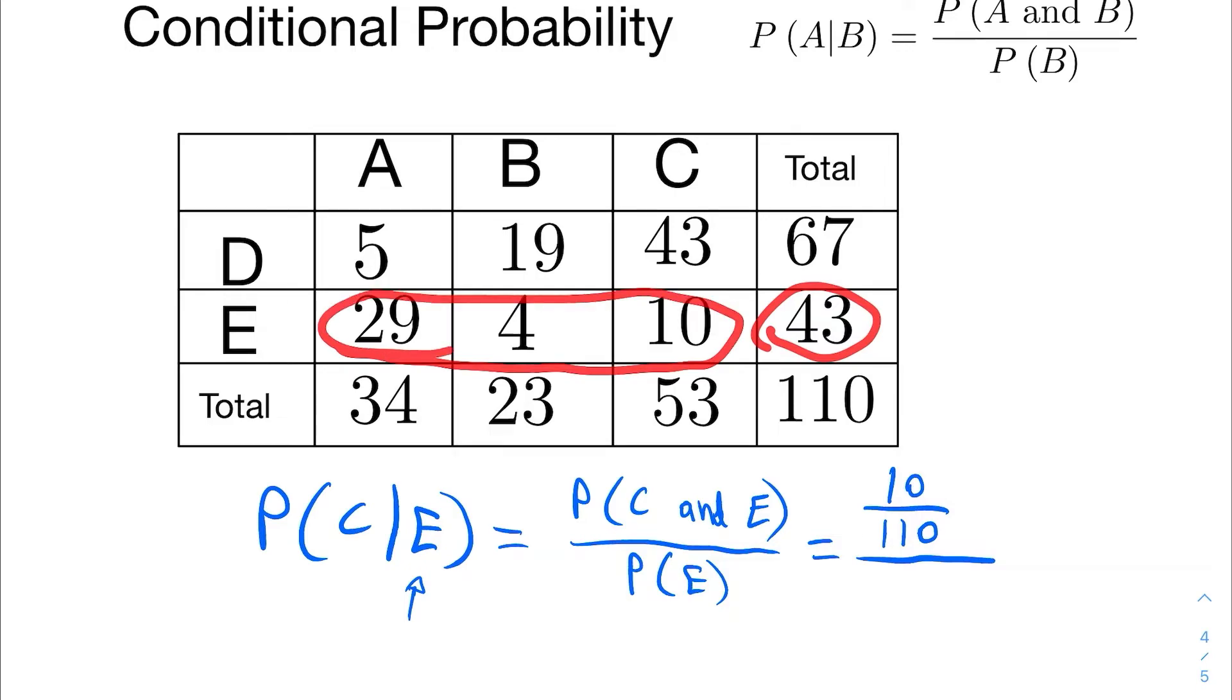On the other hand, the marginal probability of E comes from right here, the sum of all this entire row: 29, 4, and 10, which is 43 out of 110. As you'll see, every time you do this the grand total will cancel, and all you're really looking at is the intersection number, which is 10, over the sum of that row number, which is 43. It could also be the sum of a column if you're conditioned on one of the columns instead of one of the rows.